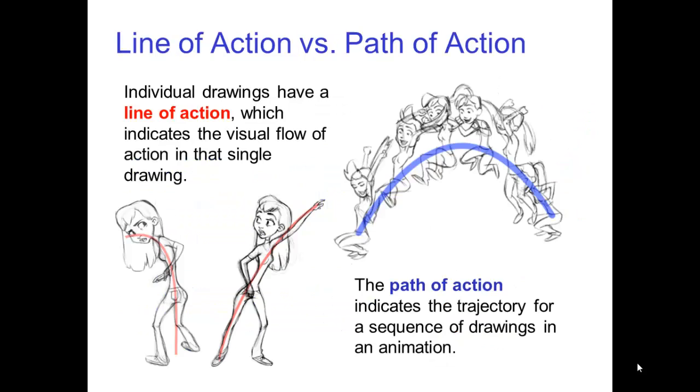There are two similar terms used in animation that you should not confuse, namely, line of action and path of action. Individual drawings have a line of action, which indicates the visual flow of action in that single drawing. The path of action indicates the trajectory for a sequence of drawings in an animation.